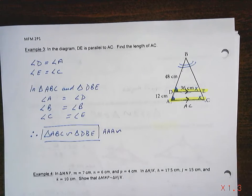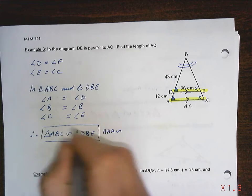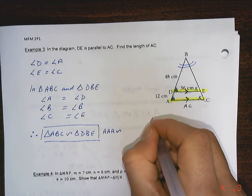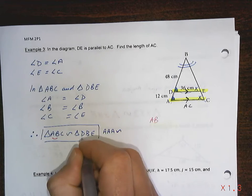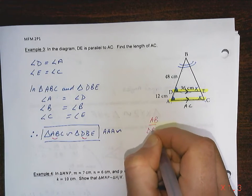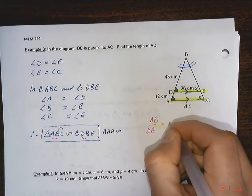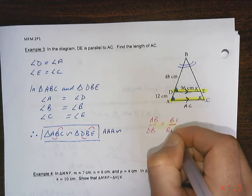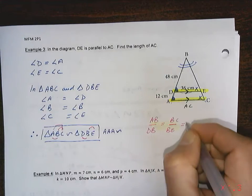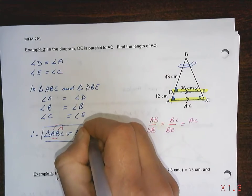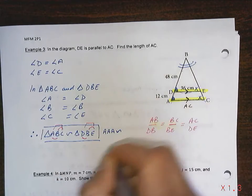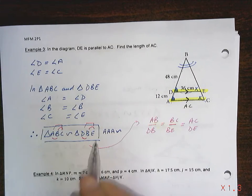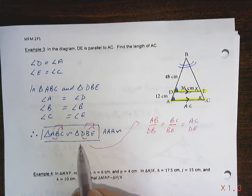So, so what? Who cares? Well, you do. You care because as soon as you know that they're similar, you know that AB, the first side divided by DB must equal BC divided by BE, which equals AC divided by DE. And that follows because they're similar. So because they're similar, their side length ratios have to be equal.